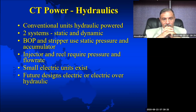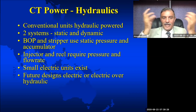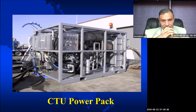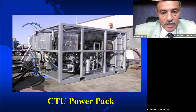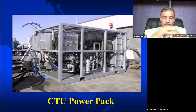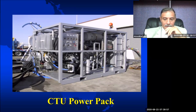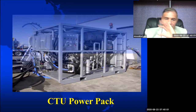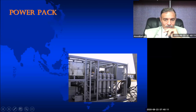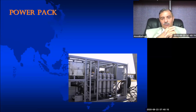Another part of the coil tubing unit is the power pack. The power pack is the source of energy. This is a power pack — I took this picture in 2007 in the States, where I went to make pre-commissioning for a simulation package. This is where our power is generated. My concern now is the other side of the power pack — what you see here are four cylinders, which we call accumulators.